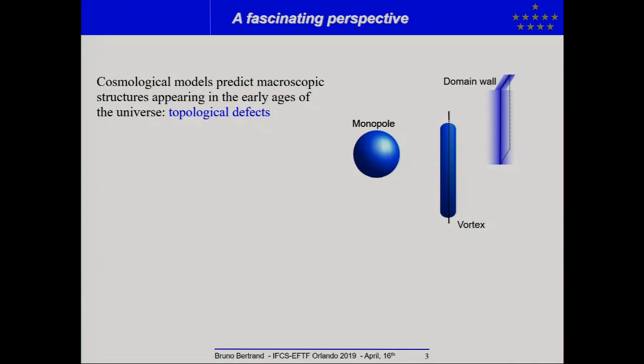The question is what family of models? We will do this in this talk with an example of cosmological models which predict a macroscopic structure which appears in the early ages of the universe, and these structures are called topological defects.